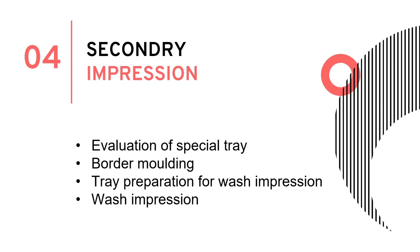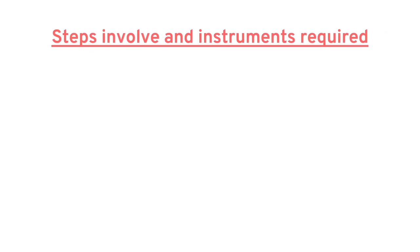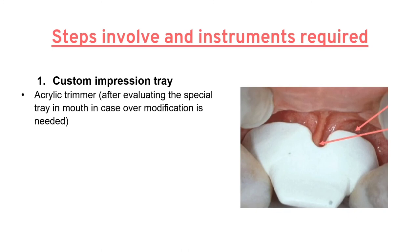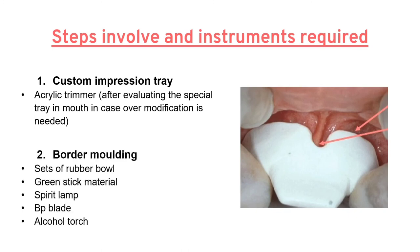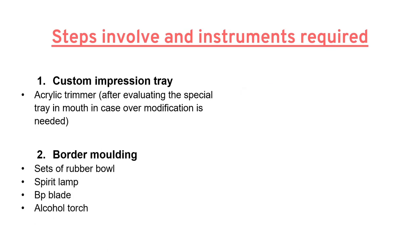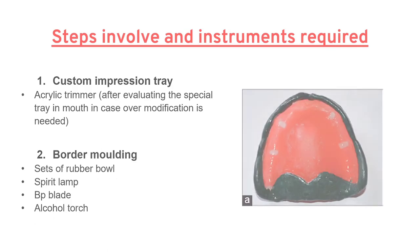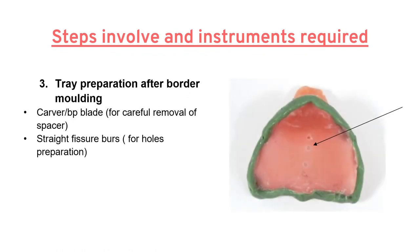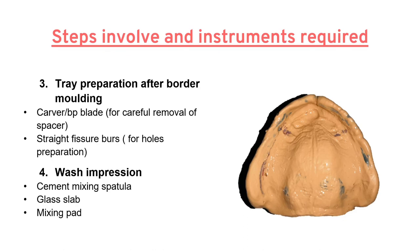Taking the secondary impression involves evaluation of the custom tray, border molding, tray preparation for wash impression, and making the wash impression. During custom tray evaluation, an acrylic trimmer is used if further reduction is required. During border molding, we require rubber bowls, green stick material, a spirit lamp, a PPP blade, and an alcohol torch. After border molding, holes are made in the custom tray using a straight handpiece. For the wash impression, we will need a cement mixing spatula, glass slab, and mixing pad.